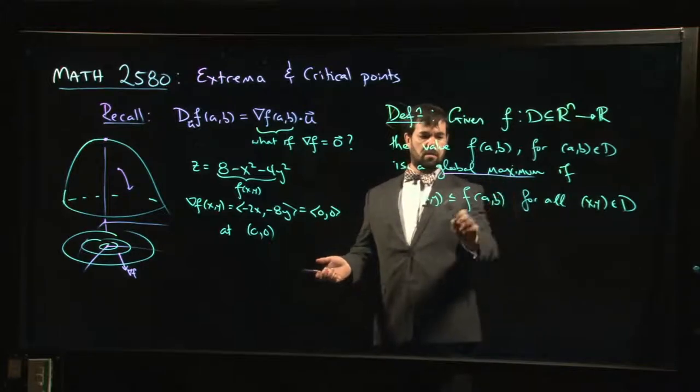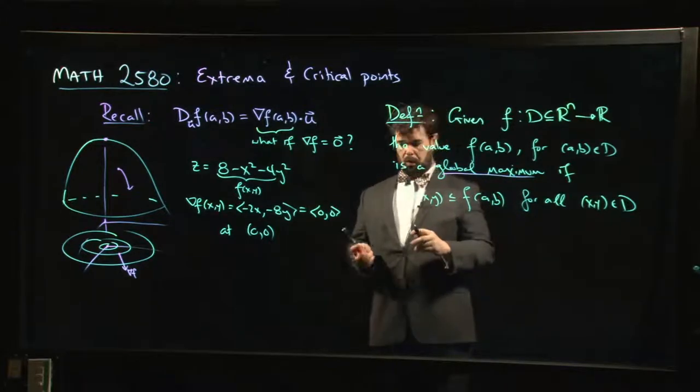That's global max, global minimum. You know what a global minimum is going to be. You just turn the inequality around.